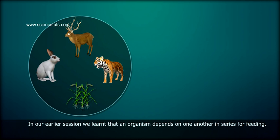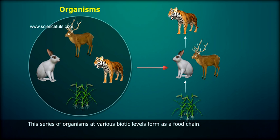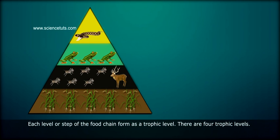In our earlier session, we learned that an organism depends on one another in series for feeding. This series of organisms at various trophic levels forms a food chain. Each level or step of the food chain forms a trophic level.